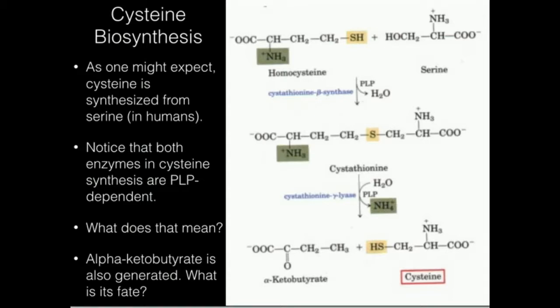It turns out that serine is going to ultimately be converted to cysteine, and it's going to occur through a two-step enzymatic process. Serine is going to react with a molecule we've seen before in the SAM cycle: homocysteine.